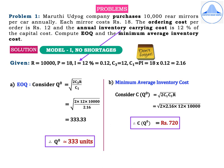Starting with EOQ: Q⁰ = √(2C₃R / C₁) = √(2 × 12 × 10,000 / 2.16) = √(333.33) ≈ 333 units after rounding off.